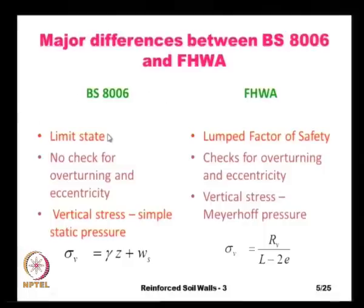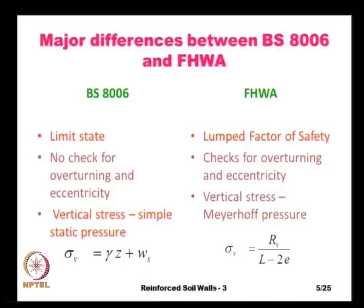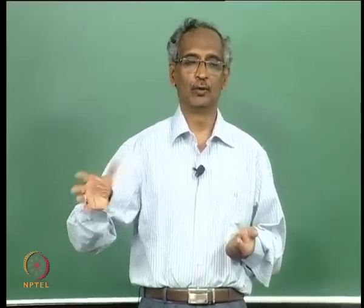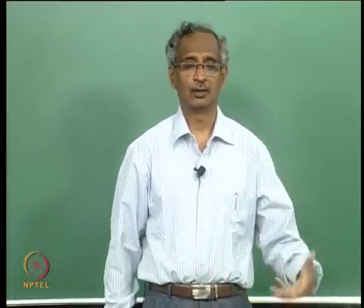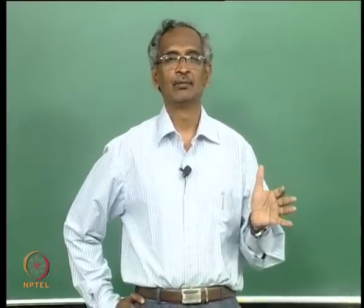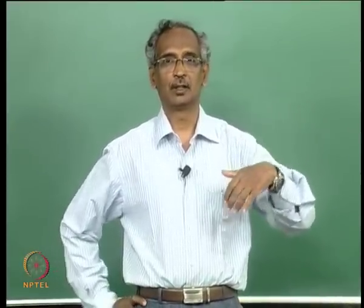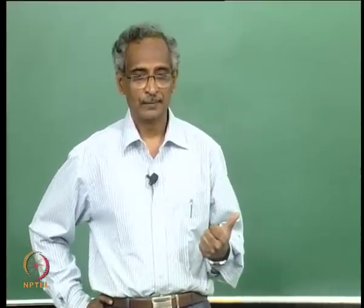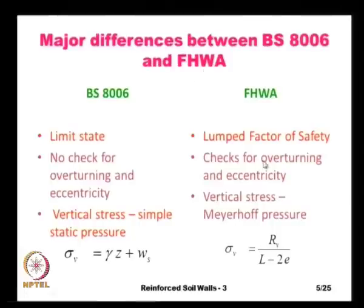In the BS code, we do not do the check for overturning and eccentricity — that is, we do not check for the overturning of the retaining wall or the eccentricity in the way the vertical load is distributed at the base. As you may recall from geotechnical engineering, we do check these aspects; however, they are not checked in the British code. In the Federal Highway Administration code, we check for the overturning effect and also the eccentricity.